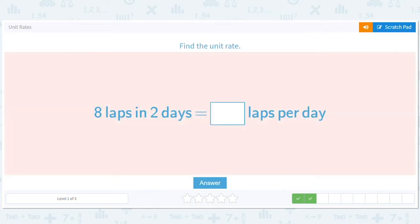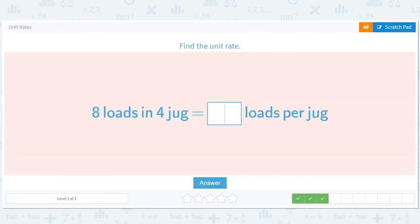I think that one just jumped out at you, right? You probably didn't even need to do any division formally. Eight loads in 4 jugs, how many loads per jug? 8 divided by 4 is 2, 2 loads per jug.